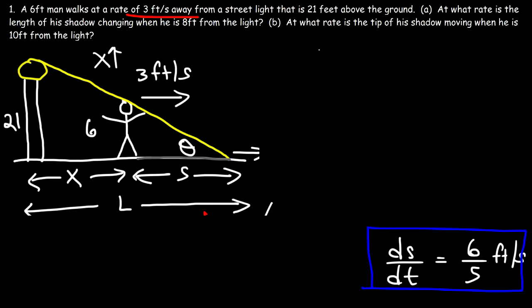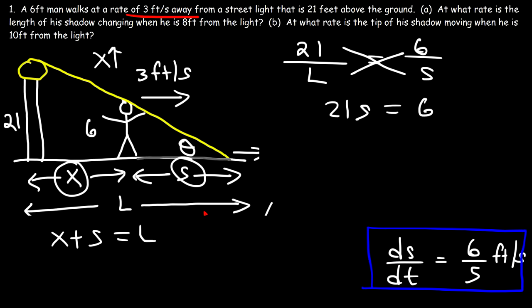Now let's start with this equation, which we had earlier. 21 divided by X plus S is equal to 6 over S. Using similar triangles. Now, instead of using X plus S, we're going to replace that with L. Because notice that X plus S is equal to L. So therefore, we have this expression. 21 over L is 6 divided by S. Now let's cross multiply. So we have 21S is equal to 6 times L. And now, in this form, let's differentiate both sides with respect to time.